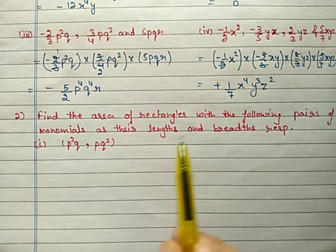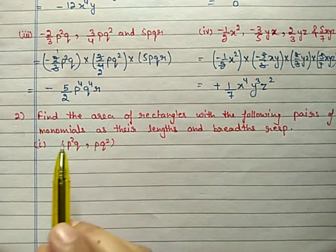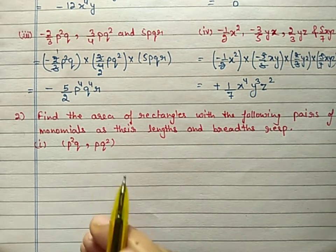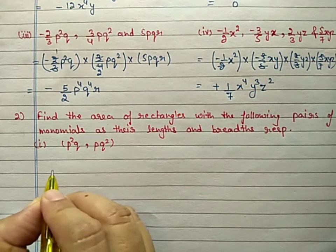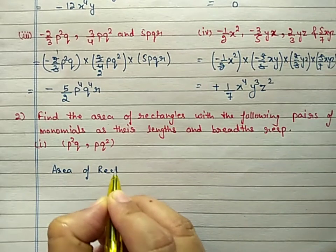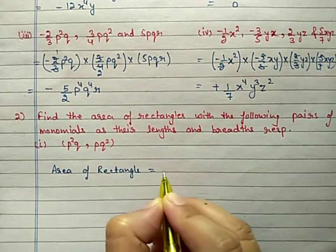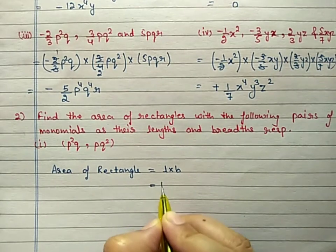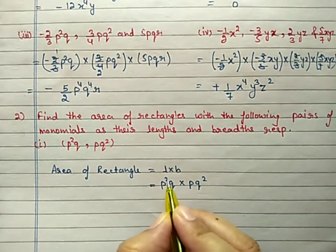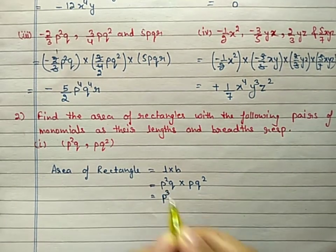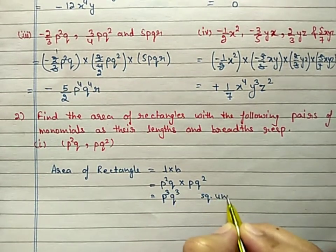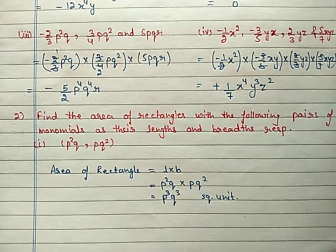Question number 2: Find the area of a rectangle with the following pairs of monomials as their length and breadth. Area of rectangle equals length into breadth. Take one monomial as length and another as breadth. p has powers 2 and 1, so total 3, giving p³. q also gives power 3. Answer: p³q³ square units, because we are finding area.